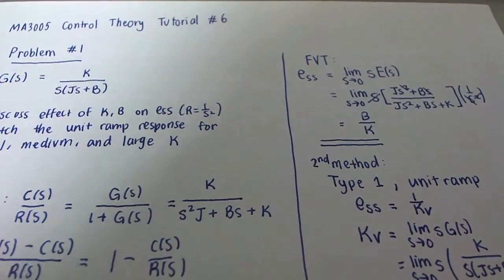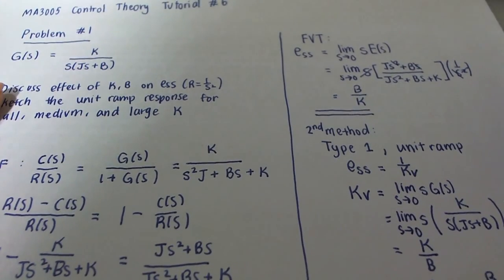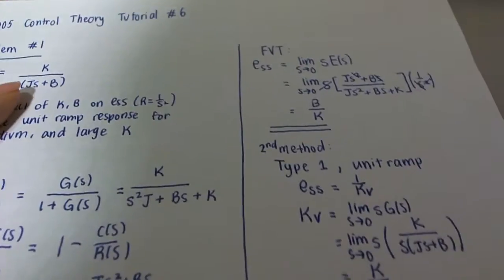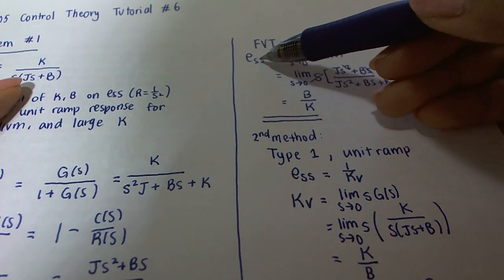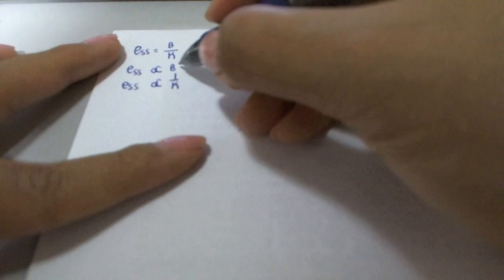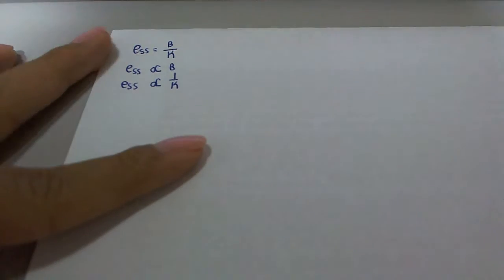Both methods give the same result, confirming ESS = b/k. From this equation, we can see that b is proportional to steady state error and k is inversely proportional to steady state error. So as we increase b, steady state error increases, and as we increase k, steady state error decreases.